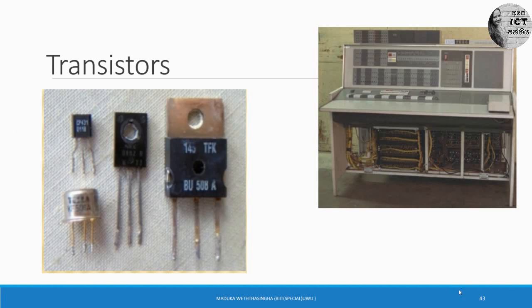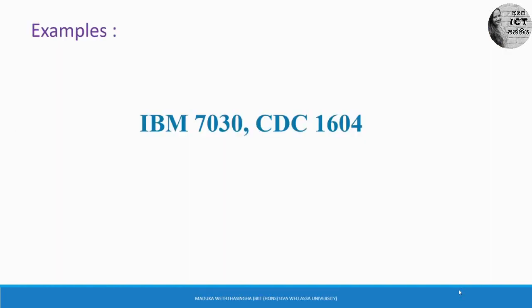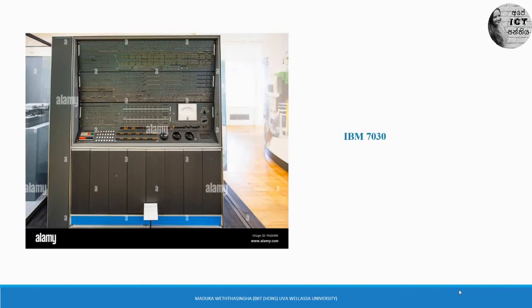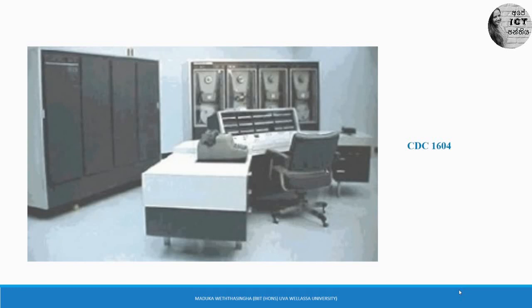Now you are going to learn about the computers made using transistors. IBM 7030 and CDC 1604. You can see a picture of the IBM 7030 computer and the CDC 1604 computer.